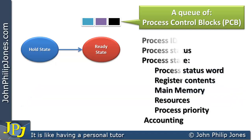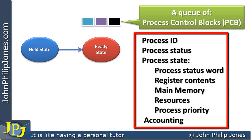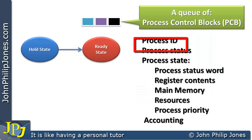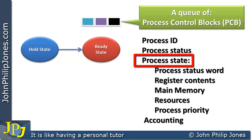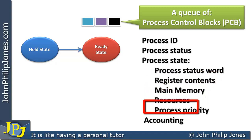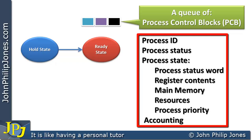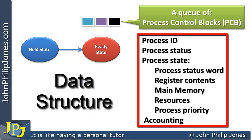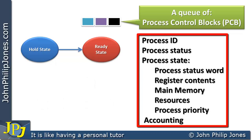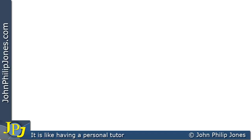When we look at what an individual process control block is, we can see it is made up of a number of things: a process ID, a process state, a process status word, and accounting information. This is a data structure — it's not the actual machine code for the process. It's not something that will be fetched, decoded, and executed. It holds information on the actual process which will be fetched, decoded, and executed.